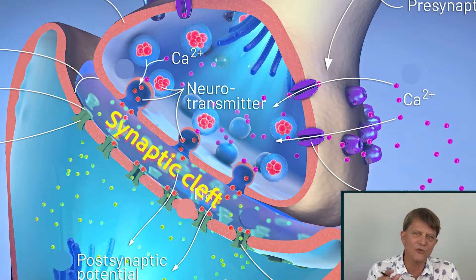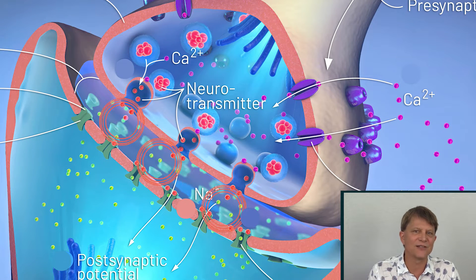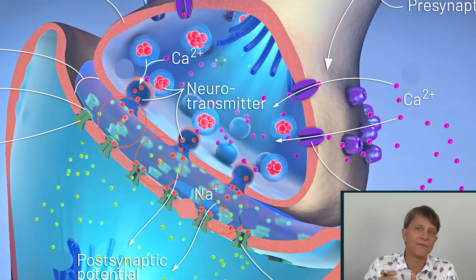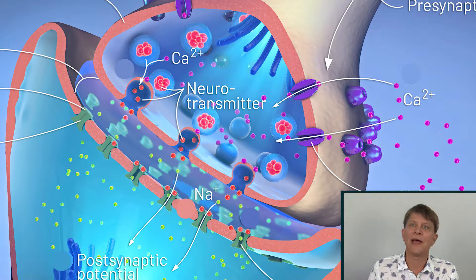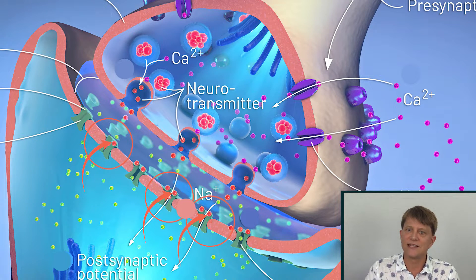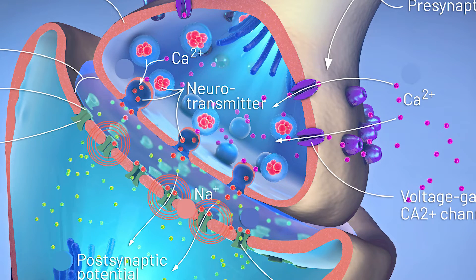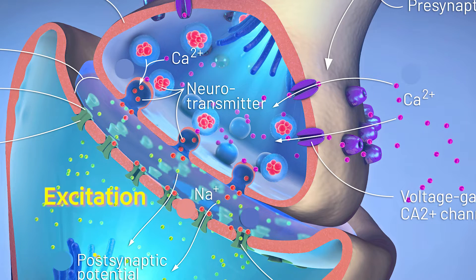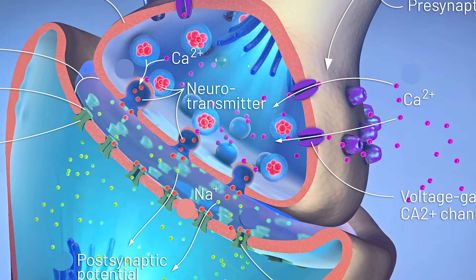So now we have a bunch of neurotransmitters in the synaptic cleft. Note that those two neurons are not actually touching — there's an incredibly small distance for diffusion of the neurotransmitters. The neurotransmitters take just a few milliseconds — a few thousandths of a second — to get from one cell to the next and latch onto the receptor. The effect on the next cell is determined by whether the neurotransmitter released is excitatory or inhibitory.